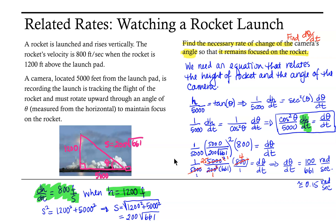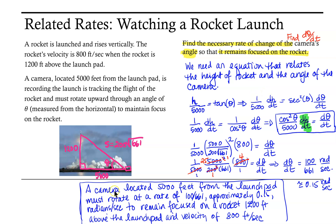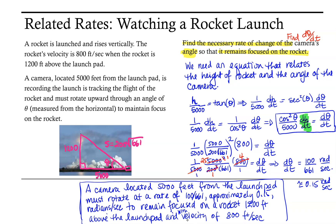Now what remains is to interpret our work. A camera located 5,000 feet from the launch pad must rotate at a rate of 100 over 661, or approximately 0.15 radians per second, to remain focused on a rocket 1,200 feet above the launch pad with a velocity of 800 feet per second. Let's go ahead and stop this segment for part A and then come back and look at a second question about this rocket.